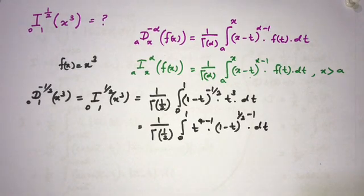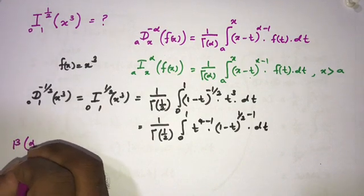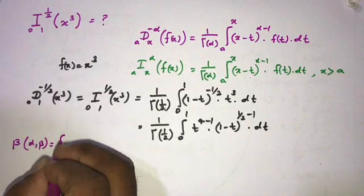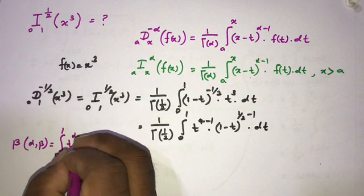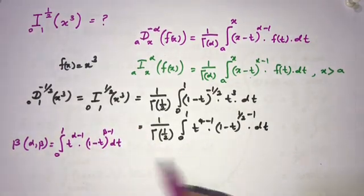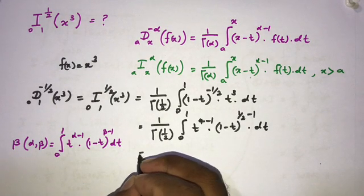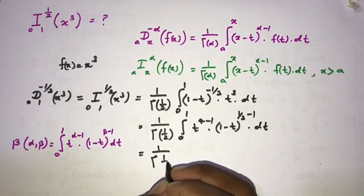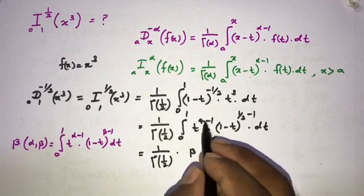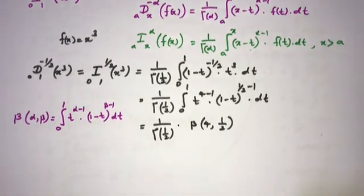I changed the powers because now I am going to use the beta function. We know the beta function: beta of alpha and beta equals the integral from 0 to 1 of t to the (alpha minus 1) times (1 minus t) to the (beta minus 1) dt. Using this, we can write the integral as 1 over gamma of one-half times beta of 4 comma one-half.